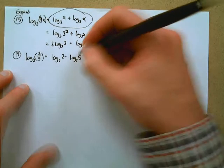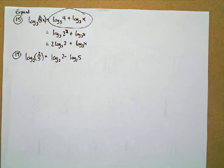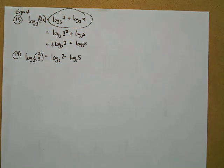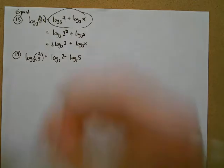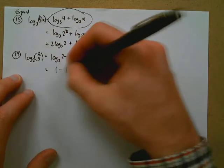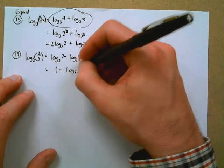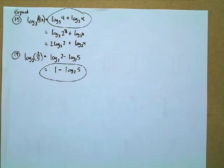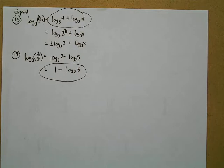Perfect. Okay, there you go. And now here we should simplify one more thing. What is the log base 2 of 2? 1. Good. And so we can just say that's 1 minus the log base 2 of 5, and be done with it there. Very good, Katie, good job.